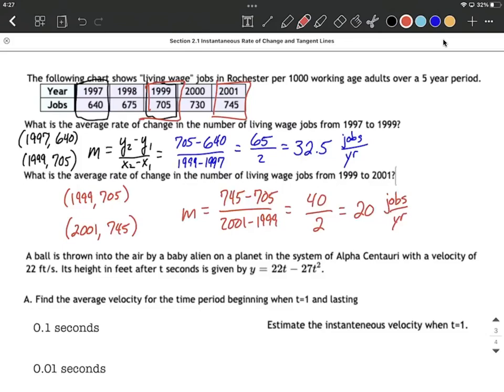Hope this helps out. I really encourage you to write them as ordered pairs and pull out that slope formula whenever those keywords—average rate or average rate of change—show up. Good luck.